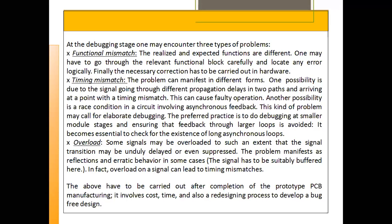We take ICs and discrete components, place them on the board, wire them and test them, and we can identify errors such as functional mismatch — where the system is not giving the expected output. We may also have timing mismatches: a single signal moving through different paths reaches nodes at different times, one signal arriving faster and another much slower, causing a timing mismatch.